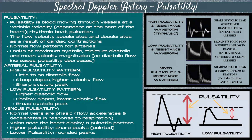As a general rule, arteries should be pulsatile. A high pulsatility pattern has little to no diastolic flow, steep slopes, higher velocity flows, and sharp systolic peaks. A low pulsatility pattern has higher diastolic flow, shallow slopes, lower velocity flow, and broad systolic peaks.